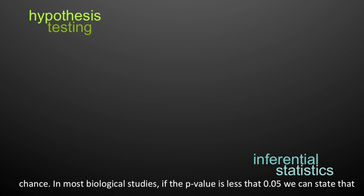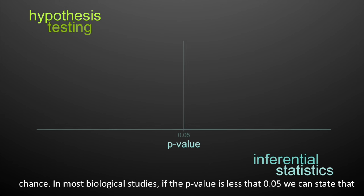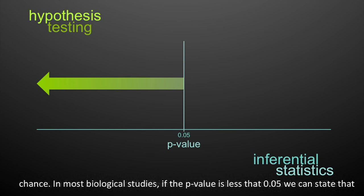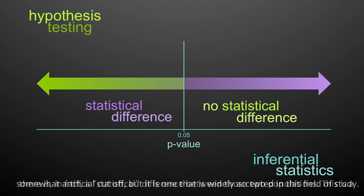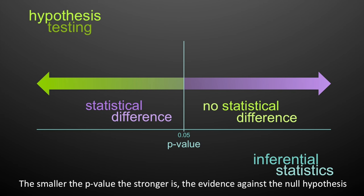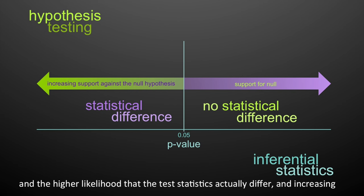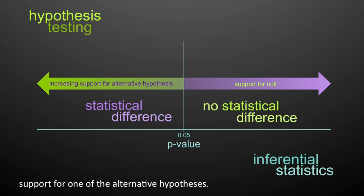In most biological studies, if the p-value is less than 0.05, we can state that there is, in fact, a statistical difference between those two populations. This is somewhat of an artificial cutoff, but it's widely accepted in this field of study. The smaller the p-value, the stronger the evidence against the null hypothesis and the higher the likelihood that the test statistics actually differ, increasing support for one of the alternative hypotheses.